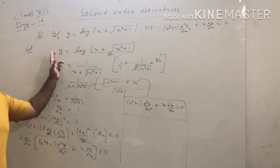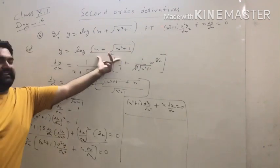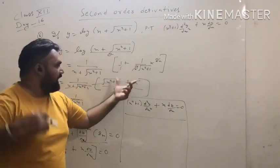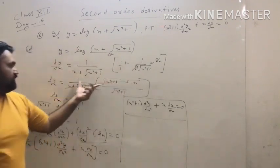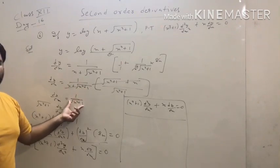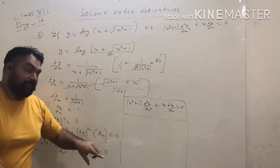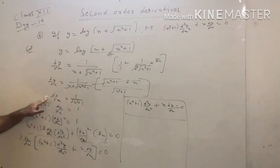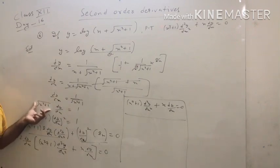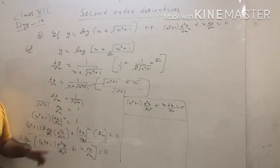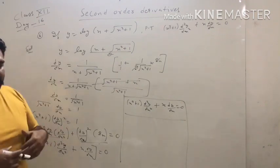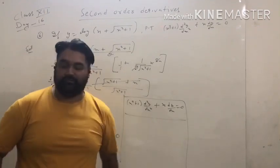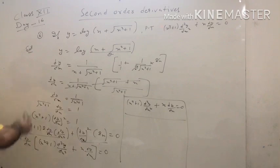Summary of the approach: first find the derivative of log θ using 1/θ rule; take LCM so those two terms cancel, leaving 1/√(x² + 1). Shift the denominator to the left side, square both sides to eliminate the root, then use the product rule to find the second derivative — because there are two terms.